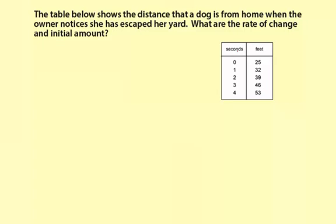So what's the rate of change and initial amount? Well, the initial amount is right here, zero seconds. Dog is 25 feet away. That's right when the owner notices the dog is missing. So our initial amount is 25 feet.